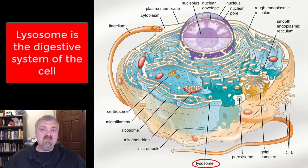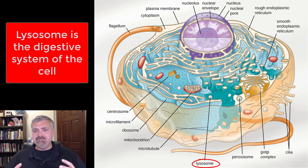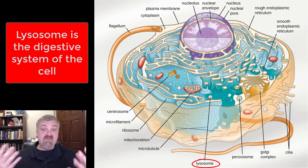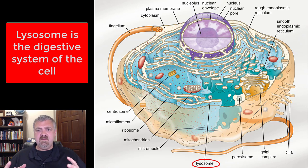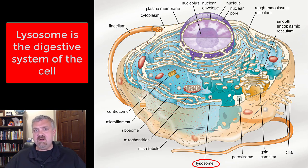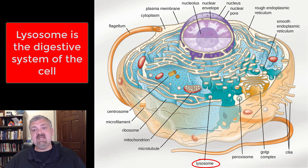Next, the lysosome — I call this the digestive system of the cell. Think of it like a stomach: it's basically a bag with dozens of digestive enzymes and acid inside, just like your stomach. With 40 to 50 different enzymes, it can break down food material, bacteria that enter the cell, and crucially, damaged organelles. Breaking down and replacing damaged organelles is one major reason our cells can stay alive so long.